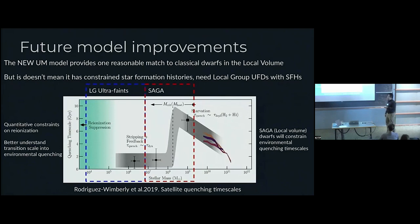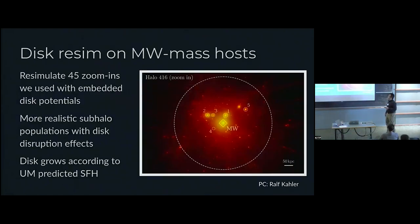Most importantly, differences with something like FIRE Elvis is we allowed our disk to actually grow according to their UniverseMachine predicted star formation histories, which is actually more self consistent.